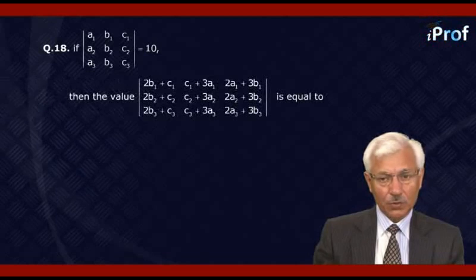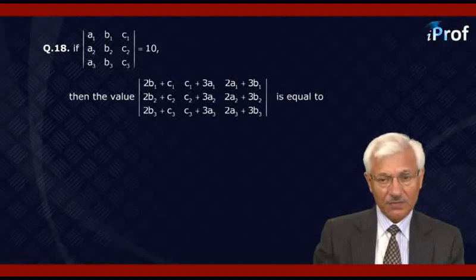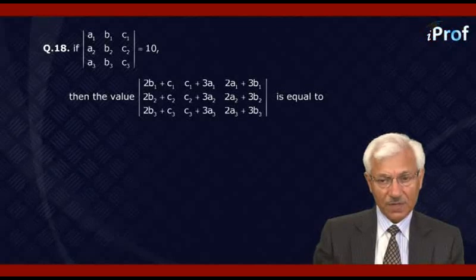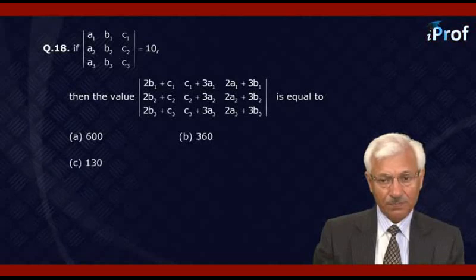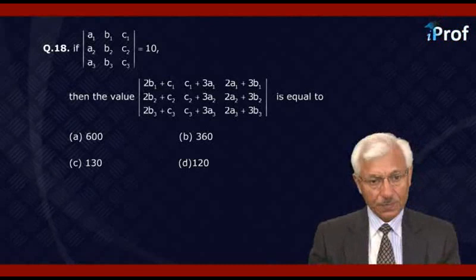Then find the value of the determinant with first column 2B1+C1, 2B2+C2, 2B3+C3; second column C1+3A1, C2+3A2, C3+3A3; and last column 2A1+3B1, 2A2+3B2, 2A3+3B3. The options are 600, 360, 130, and 120.